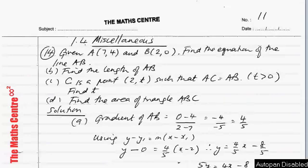Example number 14. You are given A(7,4) and B(2,0). You are asked to find the equation of the line AB.